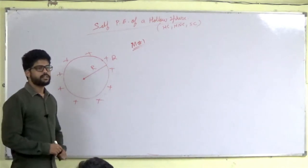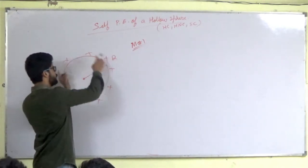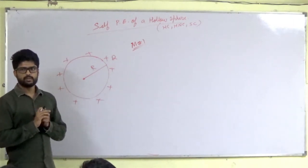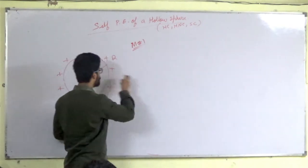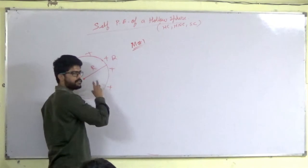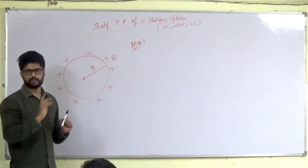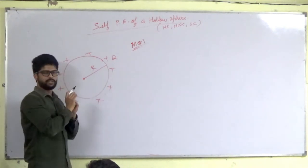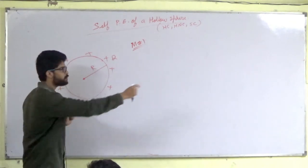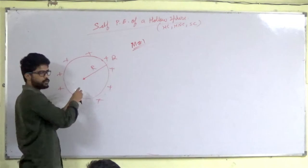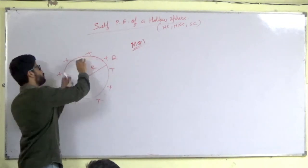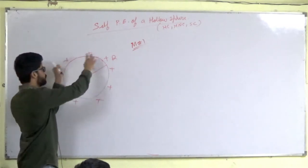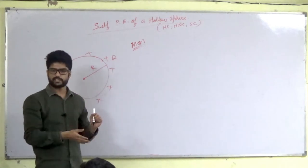We have a hollow sphere with no charge initially — zero charge. We need to bring dq charge from infinity and distribute it. If capital Q is 100 coulombs and initially it is zero coulombs, we bring one coulomb at a time and distribute it over the whole sphere. We repeat this process until the total charge reaches 100 coulombs.